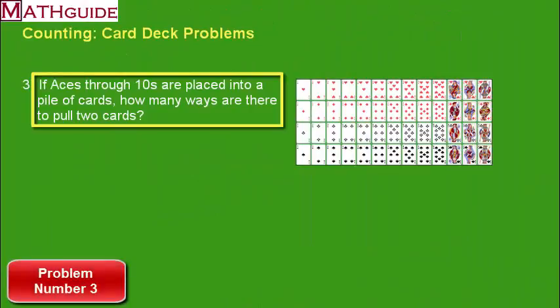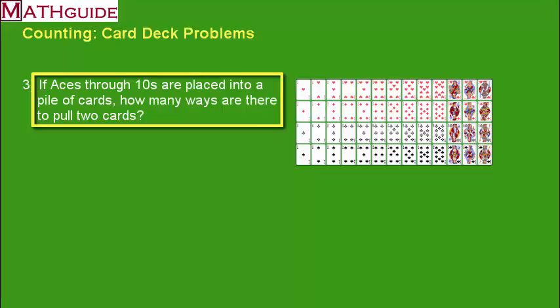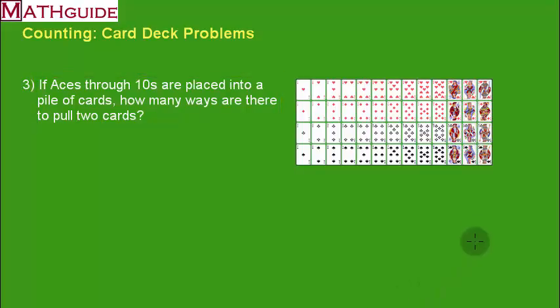Here's problem number 3. If aces through tens are placed into a pile of cards, from that pile, how many ways are there to pull 2 cards? Alright, so in other words, for this problem, we're going to abandon the face cards. So picture them gone.